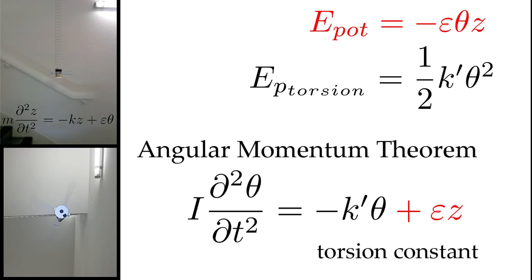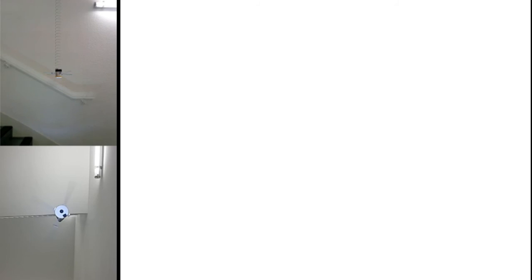K prime is the torsion-spring constant, which expresses the tendency of the system to resist torsion. We finally have a system of equations. We solve it, and we get the expression of z and theta.